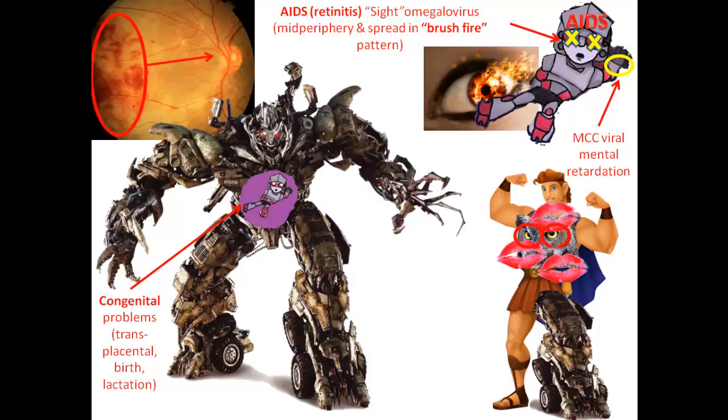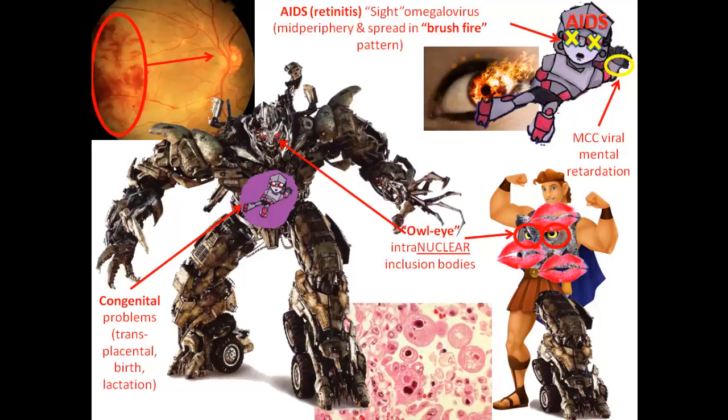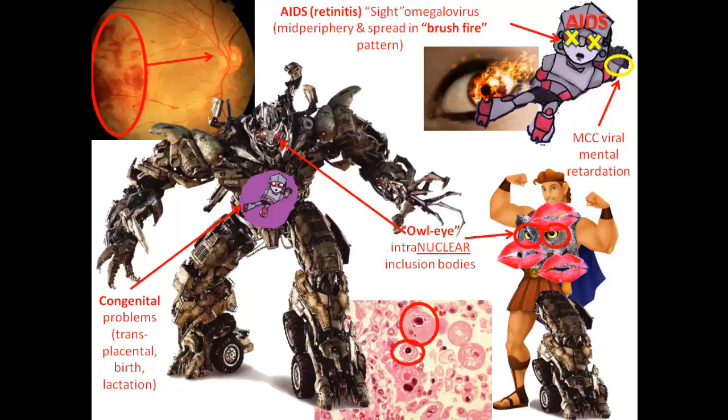Next, I'm going to put an owl on his chest to indicate owl-eye intranuclear inclusion bodies. You can remember that by the owl on his chest or the arrow pointing at Megatron's eyes. In the microscope view at the bottom, I've highlighted two of those owl-eye intranuclear inclusion bodies. Additionally, cytomegalovirus has inclusion bodies in the cytoplasm as well. This is very characteristic of CMV — inclusion bodies in both the nucleus and the cytoplasm. Remember two eyes: one for the nucleus and one for the cytoplasm.